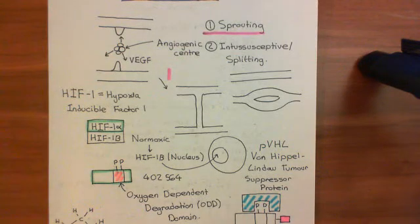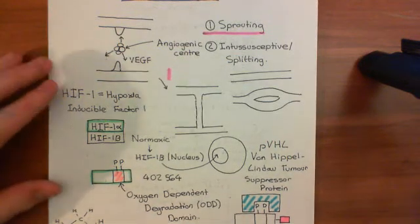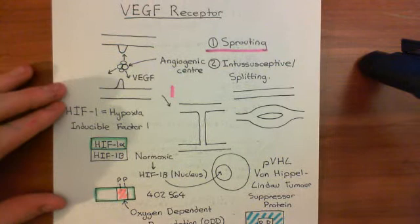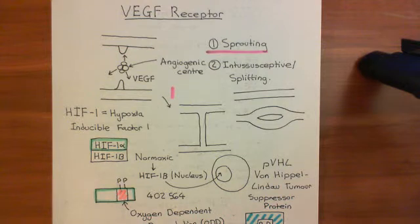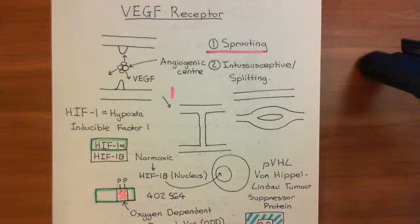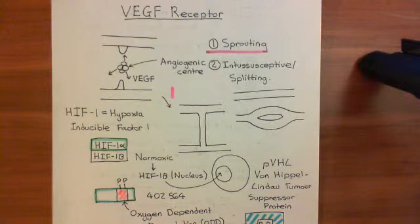Welcome back to this next video in which we are discussing the vascular endothelial growth factor receptor. We have now looked at the downstream pathways of the vascular endothelial growth factor receptor 2, which remember was the most important one in the response to vascular endothelial growth factor A.